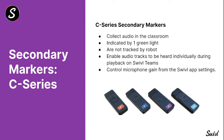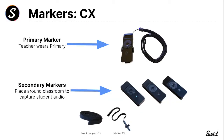Secondary markers will usually have labels on them to help you identify them. These are placed around the classroom to collect student audio — spread them around the room to help pick up audio. They're indicated by one green LED light and will not be tracked by the robot. If you have a Swivel Teams setup, you can cycle in on just the audio from one particular marker during playback.